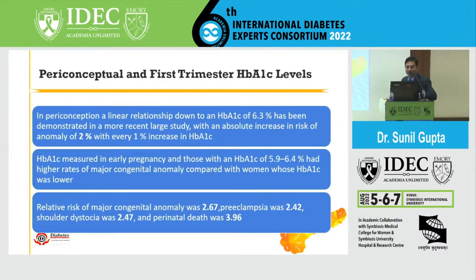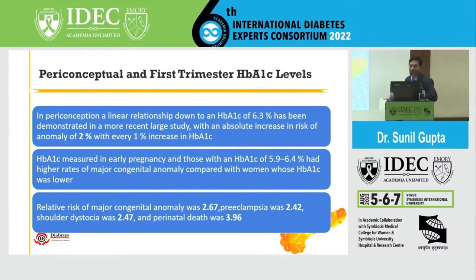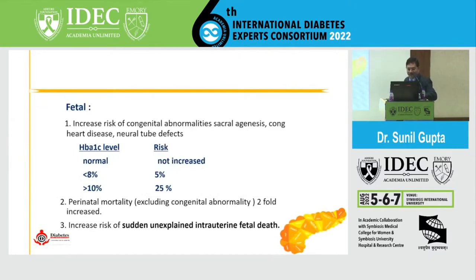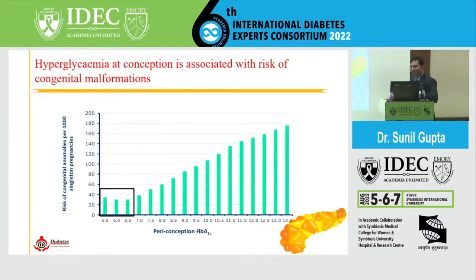HbA1c measured in early pregnancy shows that those with HbA1c of 5.9 to 6.4 had higher rates of major congenital malformations. 5.9 is one of the cut-off points reported. The relative risk of major congenital anomalies is almost 2.6, preeclampsia 2.42, shoulder dystocia around 2.4 times higher, and perinatal mortality 3.96 times higher if HbA1c in the first trimester is more than 5.9. If the HbA1c is around less than 8, congenital malformation risk is around 5%; above 10, this is around 25%.